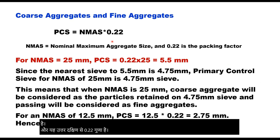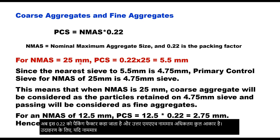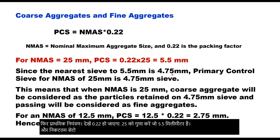The sieve that separates the coarse and fine aggregates is known as the primary control sieve (PCS), and this is 0.22 multiplied by NMAS. This 0.22 is called the packing factor and NMAS is nominal maximum aggregate size. For example, if the nominal maximum aggregate size in a mix is 25 mm, then the primary control sieve will be 0.22 × 25 = 5.5 mm. Since the nearest sieve to 5.5 mm is 4.75 mm, the primary control sieve for NMAS of 25 mm is 4.75 mm, and aggregates passing through 4.75 mm will be fine aggregate.